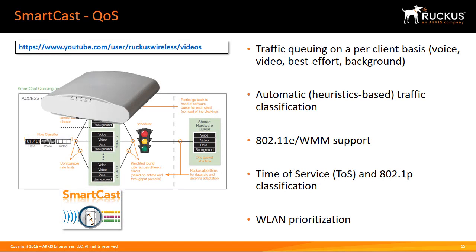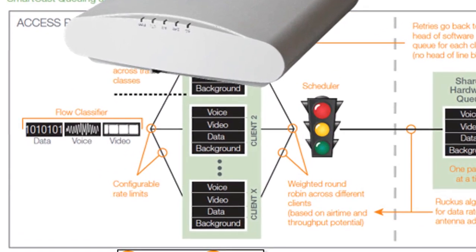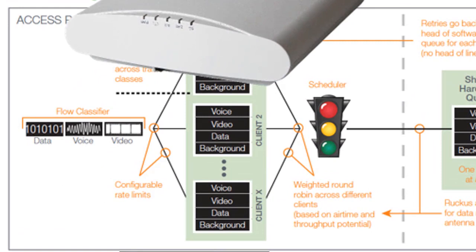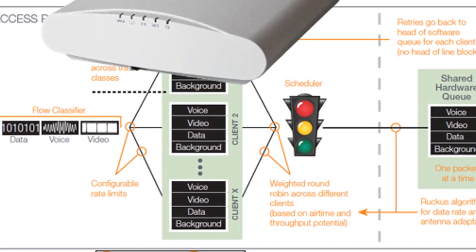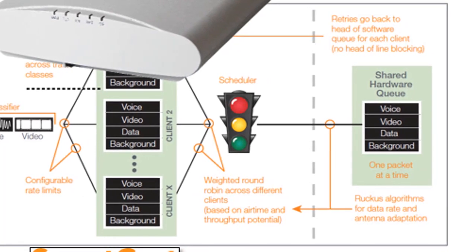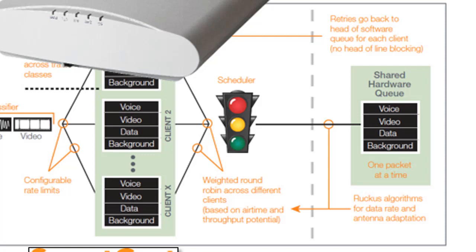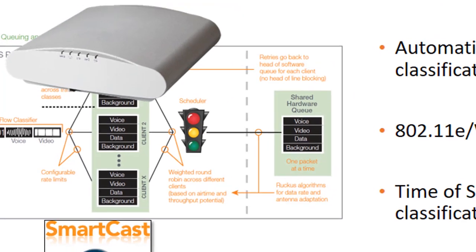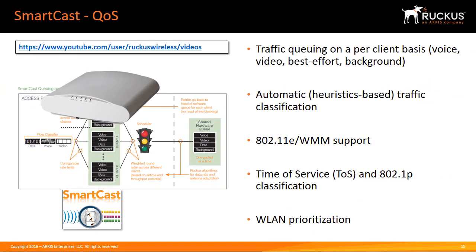SmartCast is the superset of the IEEE 802.11e WMM hardware-based queuing standard, ensuring uncompromised performance while remaining standards-compliant. With per-client queuing, SmartCast is ideal for video and voice over Wi-Fi applications because it ensures disruptive clients do not negatively affect the performance of other clients. This is an in-built additional quality of service mechanism that ensures wireless LAN traffic is processed and transmitted in the most efficient manner possible. Its sophisticated application-aware classification engine provides precision bandwidth management.